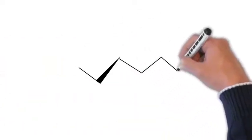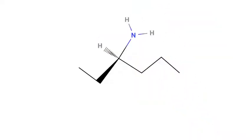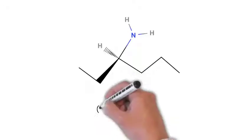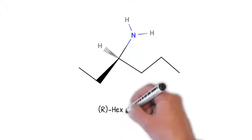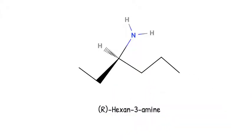Now that we know the absolute configuration of our molecule, we can implement that information into its name, and write the full name out as 3R-hexan-3-amine. The 3 indicates the location of the R stereocenter, and is optional if there is only one stereocenter on our molecule. So R-hexan-3-amine works too in our case.